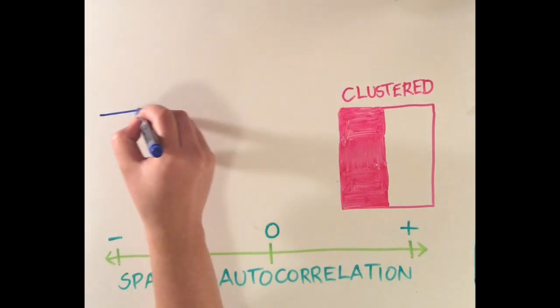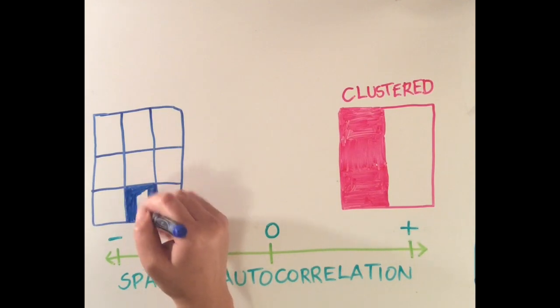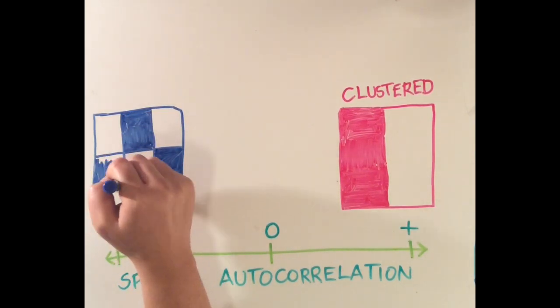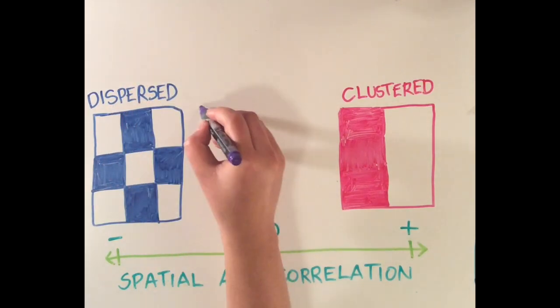Negative autocorrelation leads to the dispersal of data. Perfect dispersal would look something like a chessboard, where every point is completely surrounded by features unlike it. Perfect negative autocorrelation is incredibly rare in the natural world.